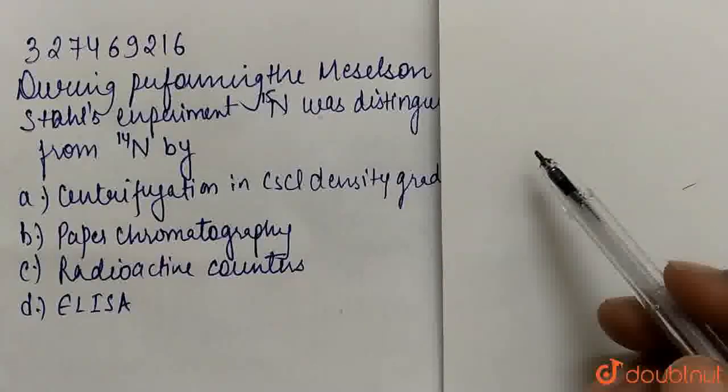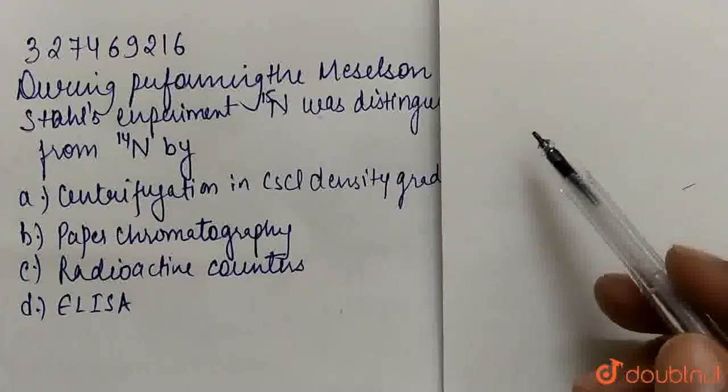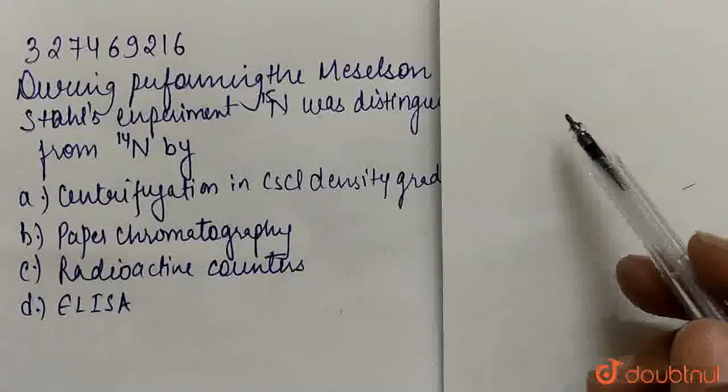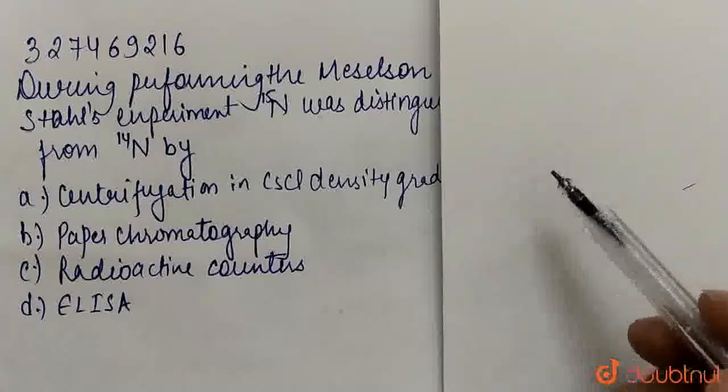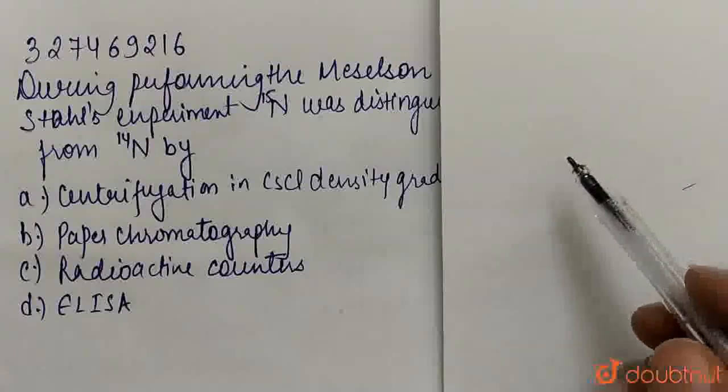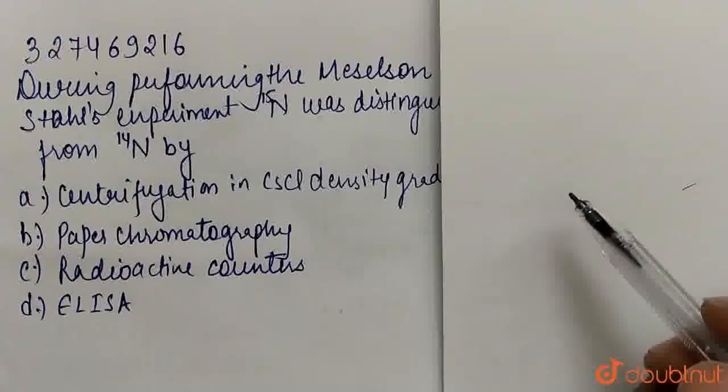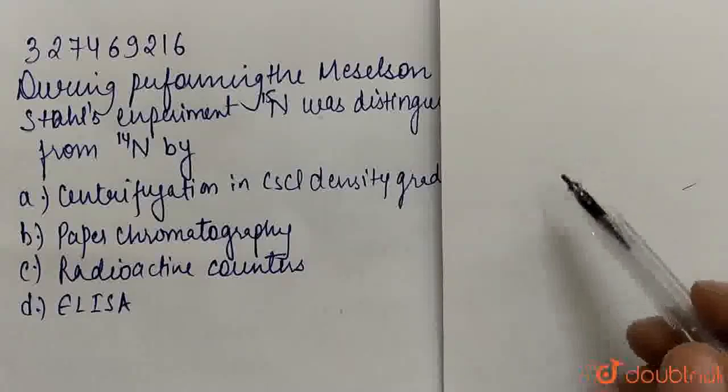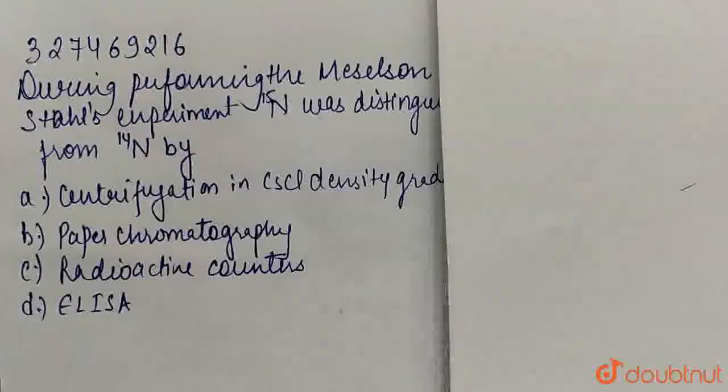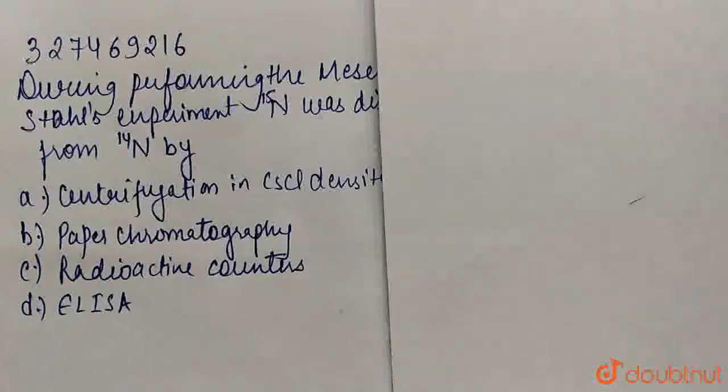So what does semi-conservative mean? The two strands act as a template and new strands are synthesized which are complementary. And after replication is completed, we get DNA molecules. We have one strand which is parental and one newly synthesized strand.